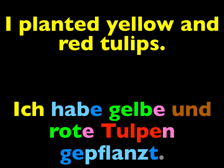The plural adjectival ending is 'e' if there is no der- or ein-word in front of the adjective. You notice here it says 'ich habe' and it goes right to the adjective — there's no der-word and there's no ein-word. Had I said instead 'I have planted the yellow and red tulips', then it would have been 'die gelben und roten Tulpen', because the adjectival ending after a der-word or ein-word is '-en'.